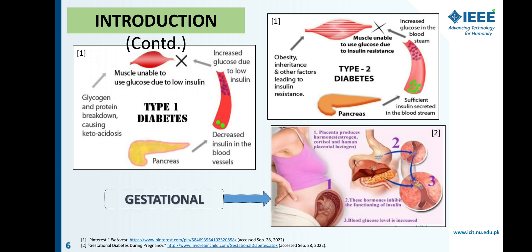Gestational diabetes is mostly developed in women who are expecting. However, it may cure after the birth of the baby, but it may cause the risk of having Type 2 diabetes in the mother as well as in the child in the near future.